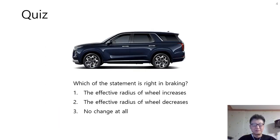Here we have the quiz I prepared. Which of the following statements is correct in braking? Number one: the effective radius of a wheel increases. Number two: the effective radius of a wheel decreases. Number three: no change at all. Are you ready to hit the answer? Let's look into details case by case.